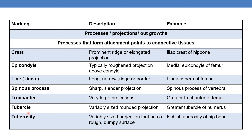Next is tubercle — a variably sized rounded projection. An example is the greater tubercle of the humerus. Next is tuberosity — a variably sized projection with a rough, bumpy surface. An example is the iliac tuberosity of the hip bone.